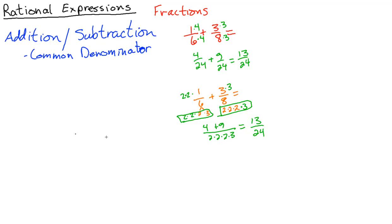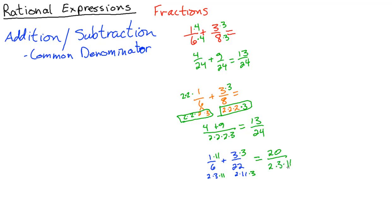Consider 1/6 plus 3/22. Do you know your 22 times tables? Using factoring: 6 = 2×3 and 22 = 2×11. For a common denominator, the first needs an 11 and the second needs a 3, giving 2×3×11. The numerators become 11 and 9, so the sum is 20/66. We can simplify: 20/66 reduces to 10/33. Notice how easy it is to simplify when everything is factored.